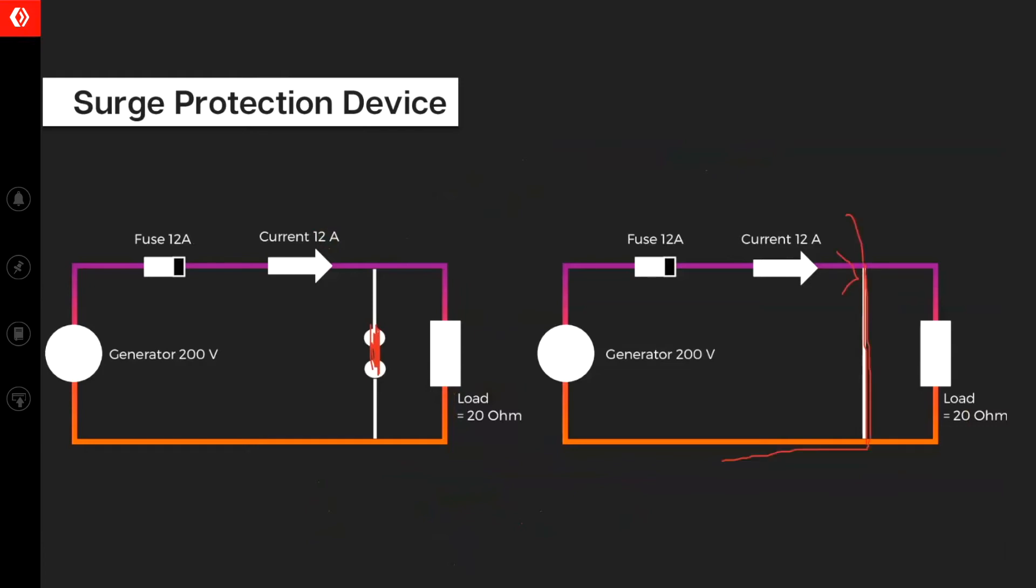This will short and it will create a path for your current such that even if there is a surge, this will directly pass through the ground and your device is protected. If I was to explain surge protection device in terms of mechanical equipment, it's like your pressure valves. If pressure inside those equipment rises beyond a certain point, that valve blows and the pressure is released. It's very similar analogy. If the voltage rises beyond a certain point, these surge protection device will short. When it shorts, it will create a short circuit condition. A heavy current will flow through this and your fuse will blow.